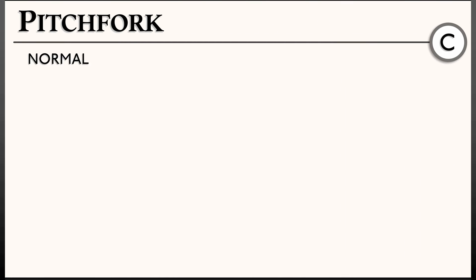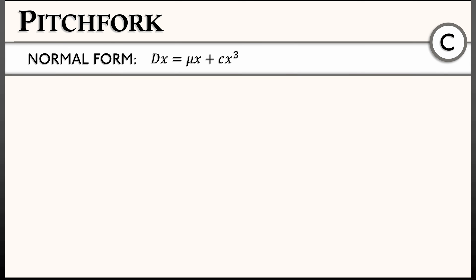Let's go. Continuous time system, the normal form for a pitchfork bifurcation is the following: dx equals mu x plus c times x cubed, where c is some nonzero constant. We might have higher order terms in there, but we're going to forget about those for our analysis.